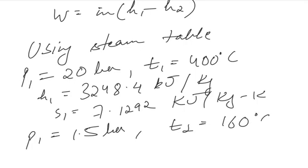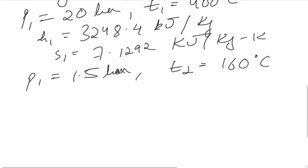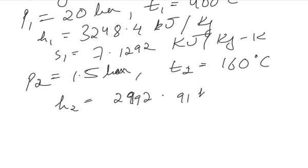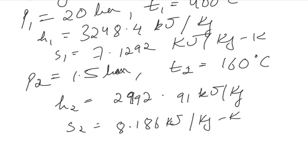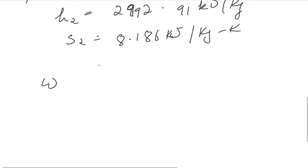At pressure 1.5 bar and temperature 260 degrees Celsius, the enthalpy h2 equals 2992.91 kJ per kg. Substituting the values, work done will come out to be about 283.9 kW.